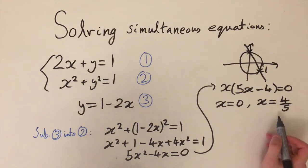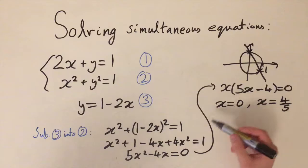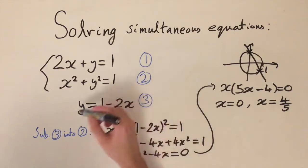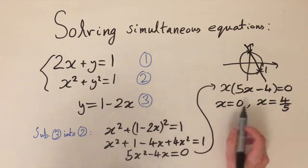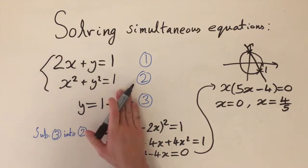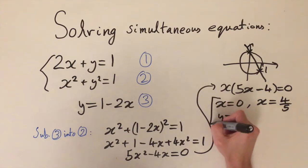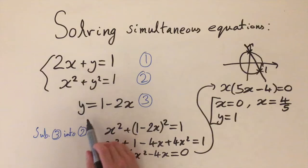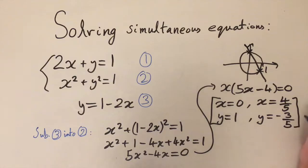We've worked out two values of x. The second part is to find the corresponding values of y that make both equations true. We substitute these x values into equation three — that's the simplest form. Substituting x equals 0, the minus 2x term vanishes, giving y equals 1. Substituting x equals 4 over 5, doing the algebra gives y equals minus 3 over 5.